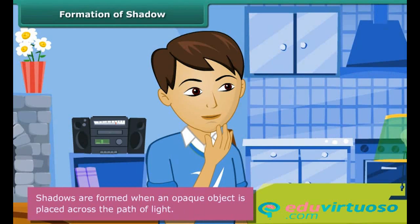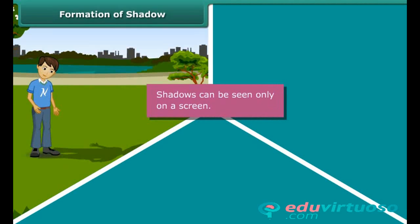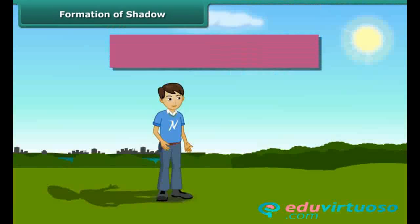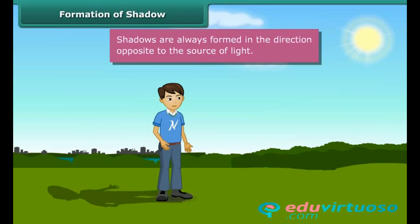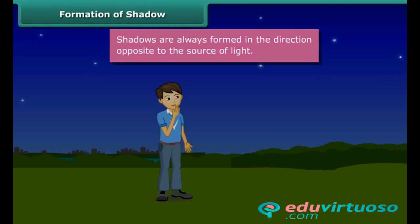Shadows are formed when an opaque object is placed across the path of light. Shadows can be seen only on a screen. The ground, walls of a room, buildings, and other such surfaces act as screens for shadows. Shadows are always formed in the direction opposite to the source of light. In the morning, since you were facing the sun, the shadow was behind you. In the evening, the sun was behind you, causing the shadow to form in front of you. When the sun sets, there was no light, and hence there were no shadows.